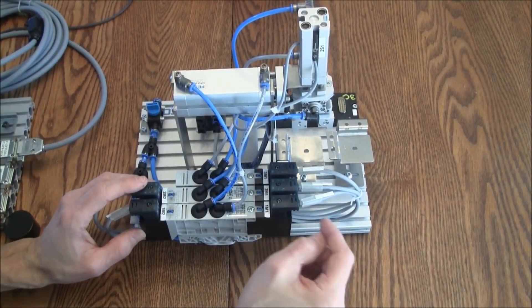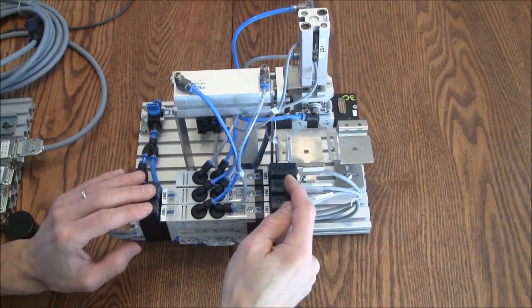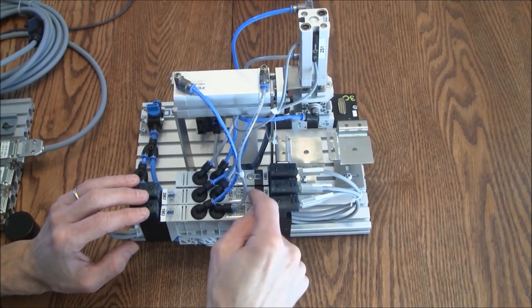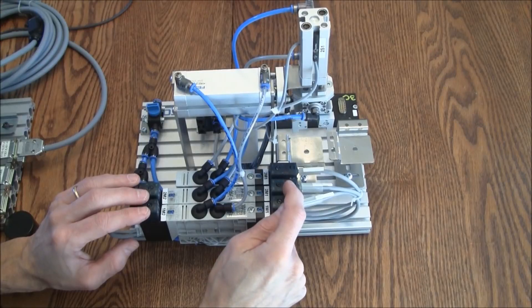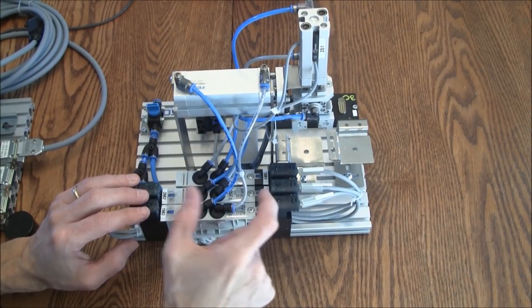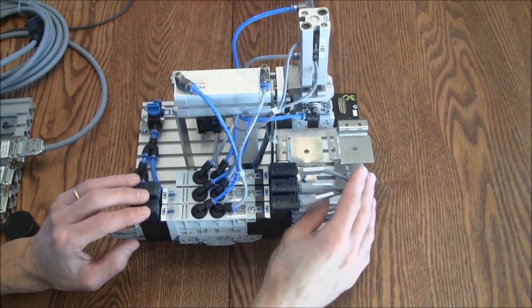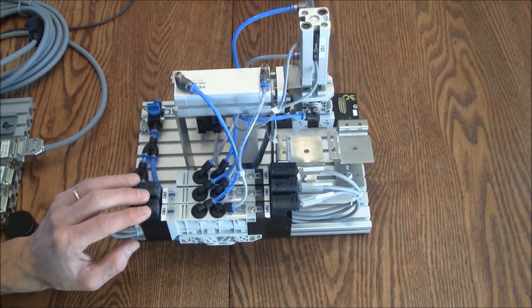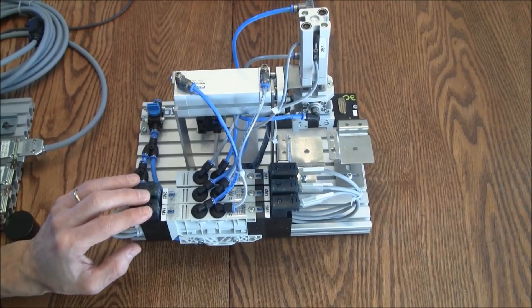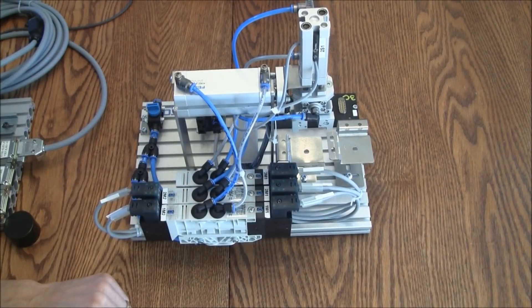There are reasons. Sometimes the program is a little bit easier to use the double versus the single. Sometimes you want to maintain that detented feature where I don't have to keep this energized all the time in order to keep the valve in that particular position. So if there were a power failure and I would lose power to my PLC and coils, I don't have to worry about the machine moving into some other position. It'll hold that position. That could be for safety reasons. So there's a number of reasons why we may have this configured the way it is.